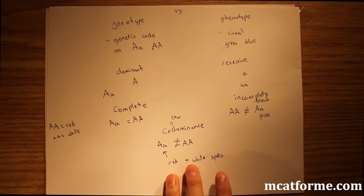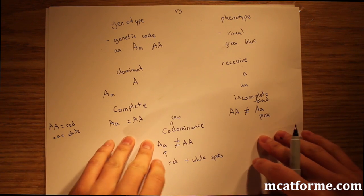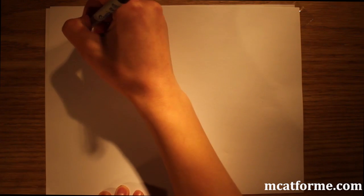You can think of co-dominance maybe like a cow. Remember however you want to remember it. It's going to be not a blend, but it's going to be a mixture of the two. You're going to have mainly mostly red and then you might have white spots.